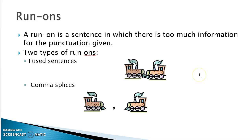Let's start with run-ons. A run-on is a sentence which has too much information for the punctuation given. There are two kinds of run-ons: the fused sentence and the comma splice. A fused sentence is when two sentences are shoved together with no punctuation. A comma splice is when you have a full sentence, a comma, and a full sentence — and a comma is not strong enough to hold those two together.